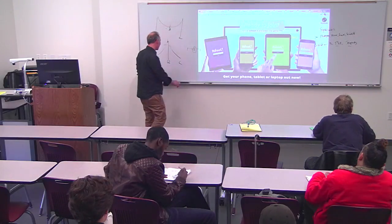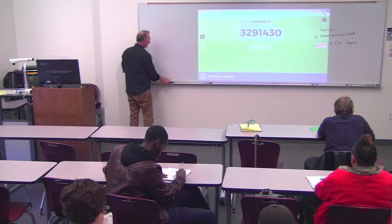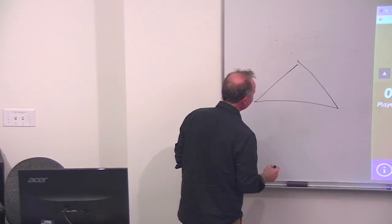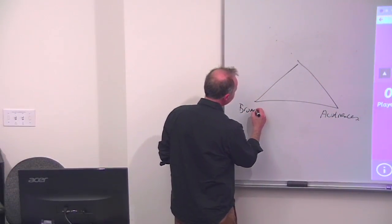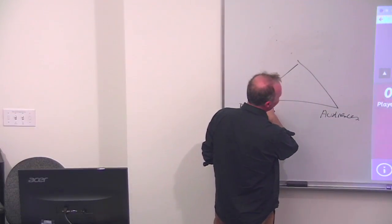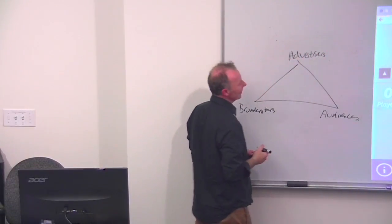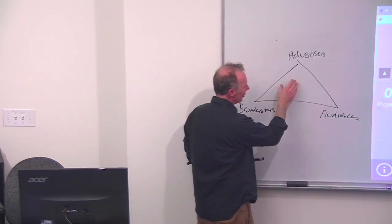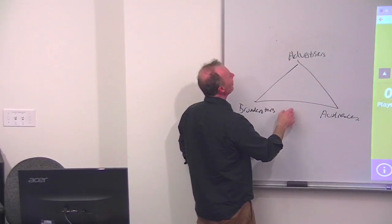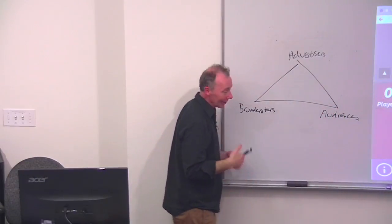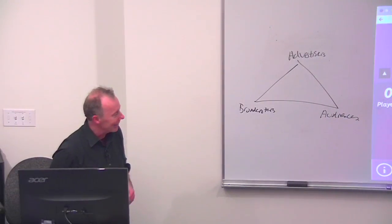Let me draw a quick picture representing how broadcasting has paid for itself for years. If you have audiences and broadcasters — they create programming that goes to audiences. Who pays for it? Advertisers, in the commercial model of broadcasting. They pay for the privilege of being able to insert their ads and talk to audiences that way.